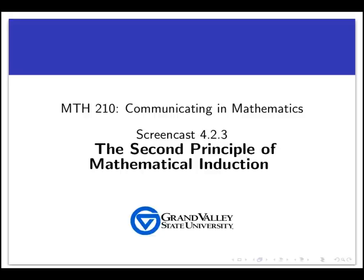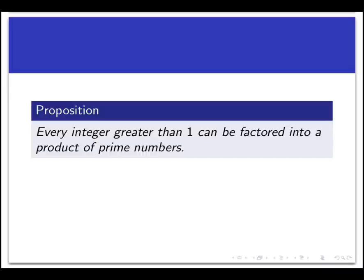Let's motivate this with an example. We're going to prove a basic fact in arithmetic that every integer greater than 1 can be factored into a product of prime numbers.